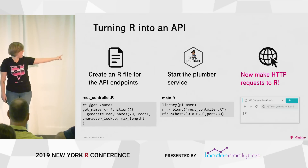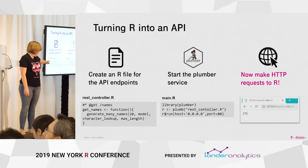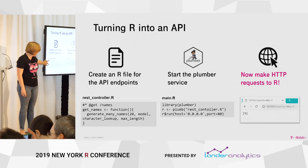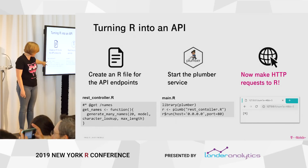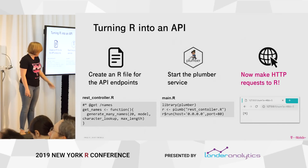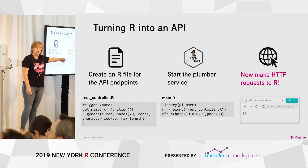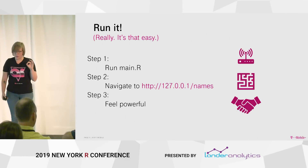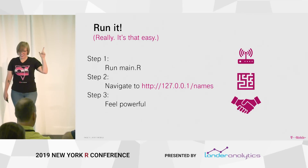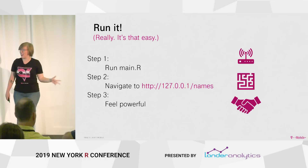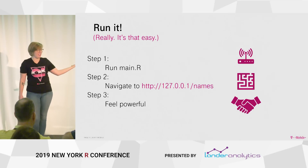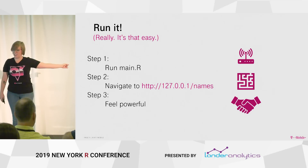First you just create a file for the endpoint. It just says, "I'm going to use a GET function, and I want to get names" — this is exactly the function that Jacqueline built yesterday, to return many names, 20 names. Then we do the import, you go to the website on your computer, and it returns a result. It's incredibly easy. You just run your function, go to the actual port that you opened to the internet, and then you feel super powerful. Because you did a thing that engineers brag about doing and say that you can't do in R all the time — but six lines of code, and I build Java services, and this is way easier.